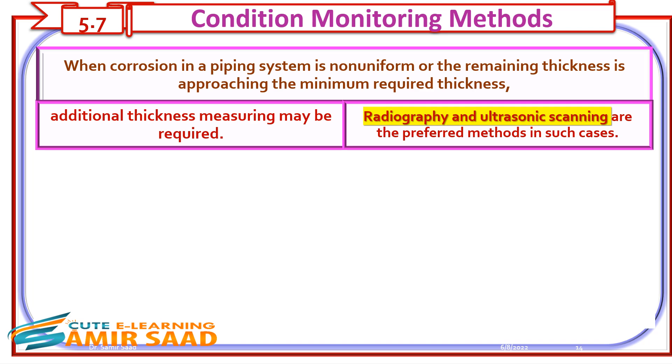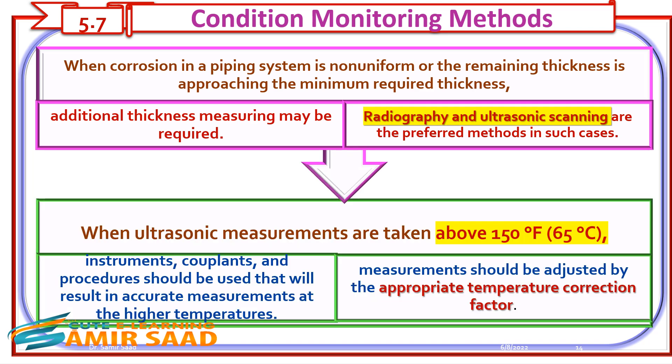When corrosion in a piping system is non-uniform or the remaining thickness is approaching the minimum required thickness, additional thickness measuring may be required. Radiography and ultrasonic scanning are the preferred methods in such cases. When ultrasonic measurements are taken above 150°F (65°C), instruments, couplants, and procedures should be used that will result in accurate measurements at the higher temperatures, and measurements should be adjusted by the appropriate temperature correction factor.